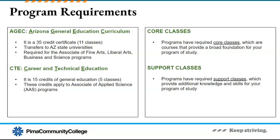Associate degrees that are for direct employment will contain CTE requirements. Direct employment degrees that have CTE requirements are any Associate of Applied Science programs. CTE stands for Career and Technical Education, and it requires 15 credits, equaling a total of 5 general education classes. Programs also have core and support course requirements. Core classes provide a broad foundation for your program of study, while support classes provide additional knowledge and skills for your program of study.